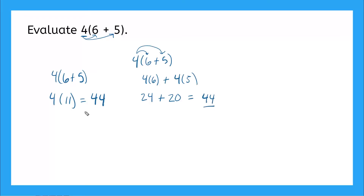Same answer — and they should match, right? We're doing the same thing with two different methods. So how does the distributive property actually work?